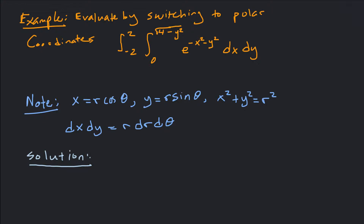A few things to recall for polar coordinates: x equals r cosine theta, y equals r sine theta. And then the relationship is x squared plus y squared equals r squared. Whenever we switch to polar coordinates for a double integral, we have to remember that dA is r dr d theta.